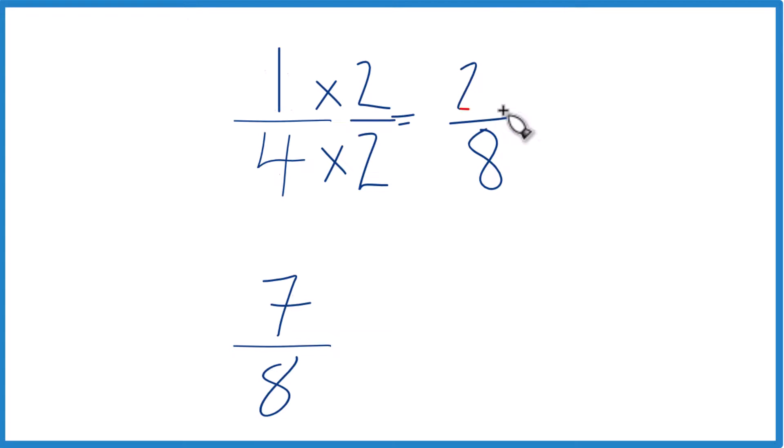1 times 2 is 2, and 2/8, that's equivalent. That's an equivalent fraction to 1/4. Down here we already have 7/8, so let's just call this 7/8. And now we have the same denominator, compare the numerators.